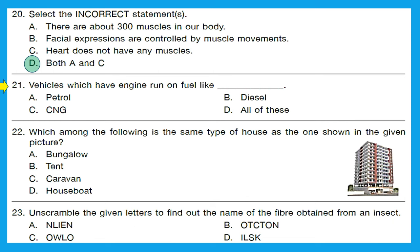Question 21: vehicles which have an engine run on fuel like petrol, diesel, CNG, or all of these? The right answer is option D, all of these. Engines of different vehicles are designed differently and use different types of fuels — petrol, diesel, and CNG are all fuels.